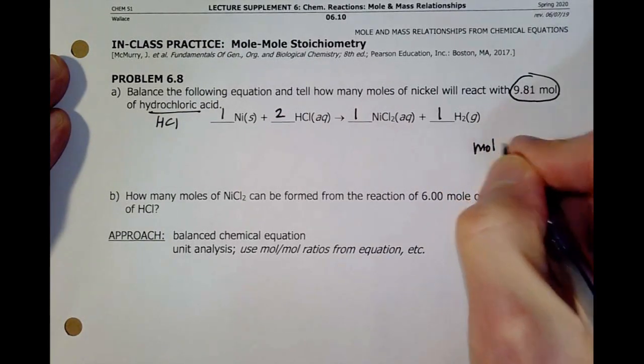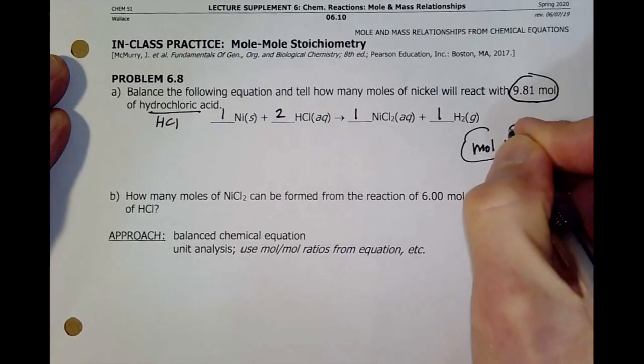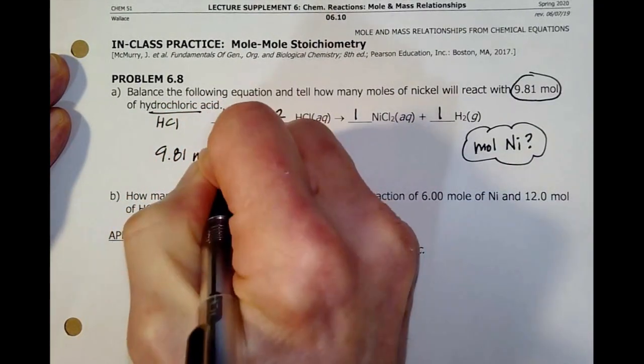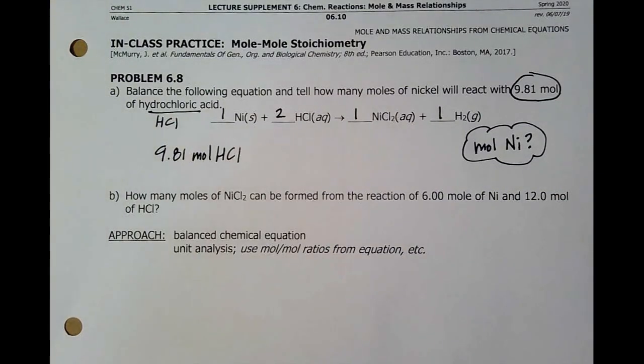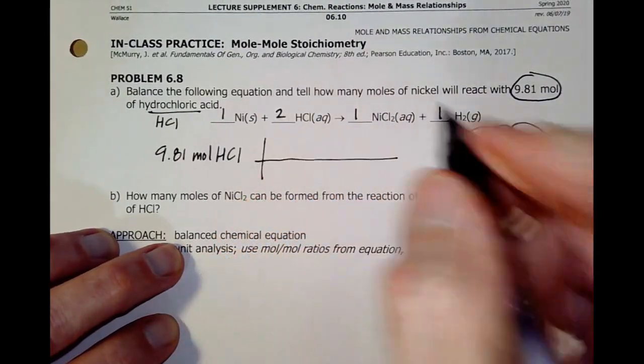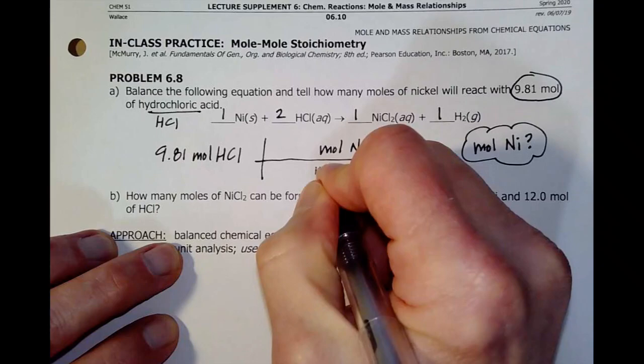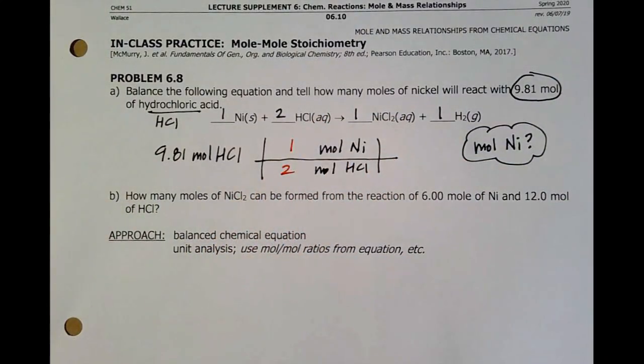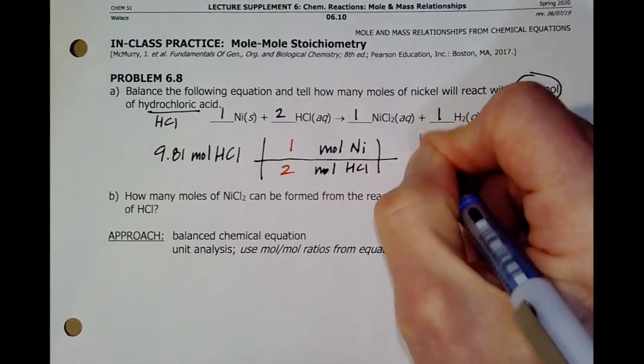Now, it says, I want to know moles of nickel. That's what I'm trying to get to. I've got 9.81 moles of HCl. Now, stop the video and you figure out what the ratio is and what the math should be there. All right, you're back. You probably said, oh, I should have moles of nickel, moles of HCl. I go back to my recipe now. I'm one to two, which gives us, again, I don't have a number. Well, I'll just do the math. 9.81 divided by two, and then 4.91 moles of nickel.